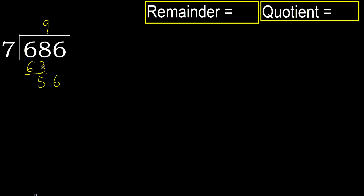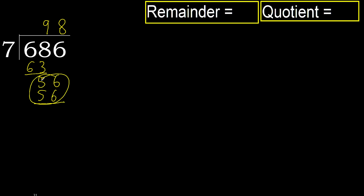Next, bring down 56. 7 multiplied by 9 is 63, which is greater. Multiply by 8: 56 is not greater. Subtract.